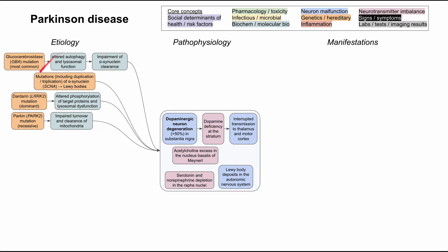It's hard to tie many of these etiologies to specific items within the pathophysiology, and that highlights a gap in our knowledge. We know a lot about genetic and hereditary causes, but a lot of the Parkinson's we diagnose is idiopathic — we don't know what causes it. That unfortunately highlights how much we still don't know about the origins of this disease.